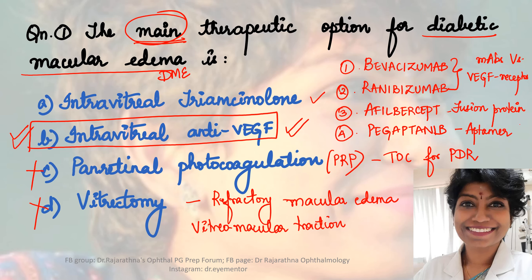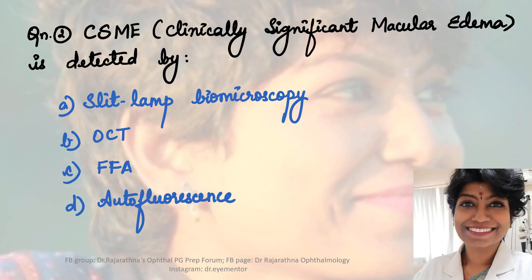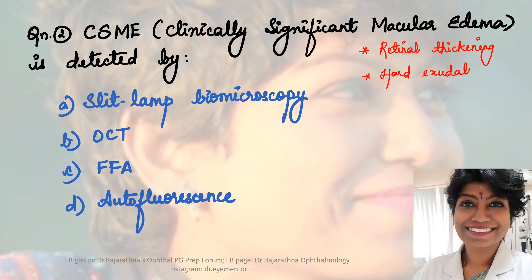Anti-VEGF agents are always given as intravitreal injection through the pars plana. Moving to the next question: CSME - clinically significant macular edema - is detected by? The options are slit lamp biomicroscopy, OCT, FFA, and autofluorescence. On slit lamp biomicroscopy I can look at the fundus and assess macular edema. What I'm looking for is retinal thickening and a significant amount of hard exudates. So slit lamp biomicroscopy - yes. But let me look at the other options.